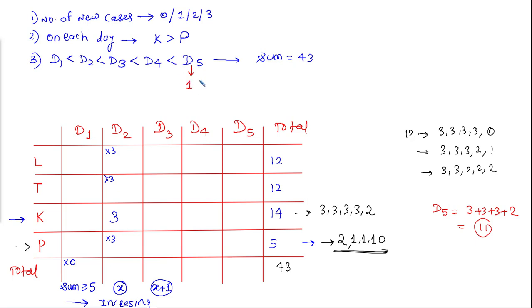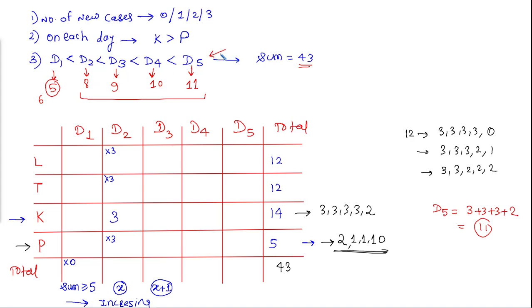If day 5 is 11, the maximum D4 can take is 10, D3 is 9, D2 is 8, giving a sum of 5+8+9+10+11 = 43 — which exactly matches our total. This is the only possible sequence. So the total number of new cases on these 5 days is 5, 8, 9, 10 and 11 for days 1 through 5 respectively.